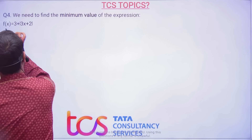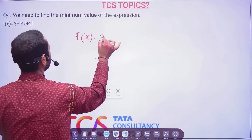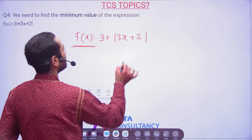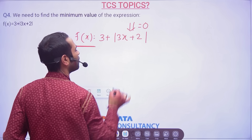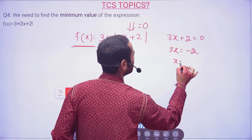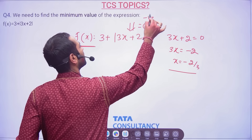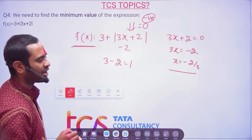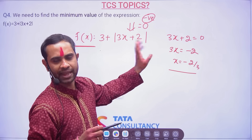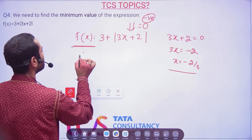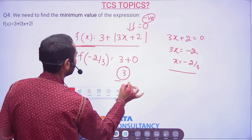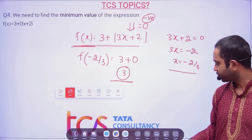Next question: find the minimum value of f(x) = 3 + |3x + 2|. The minimum value occurs when the modulus expression equals 0, i.e., when x = −2/3. Since the modulus can never be negative — its minimum is 0 — the minimum value of f(x) is 3 + 0 = 3. So 3 is the minimum value of this expression.